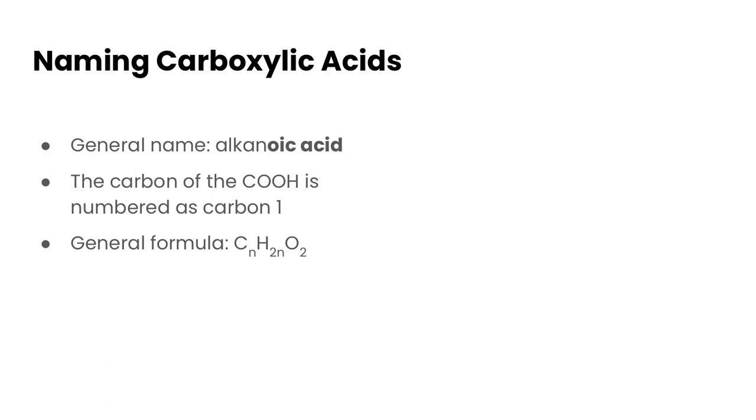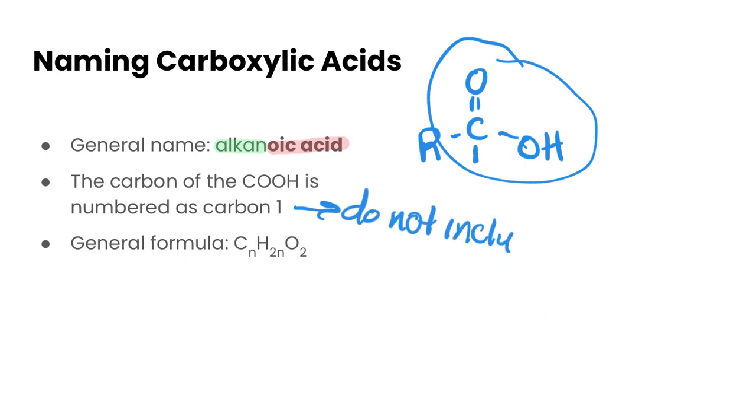We're going to start with carboxylic acids. Carboxylic acids have the general name of alkanoic acid - that's the alkane name with the E ending dropped and it ends in oic acid. These are the type that have the carboxyl functional group - they have a C double bonded to O and then bonded to an OH. This always ends up having to be at the end of a carbon chain. So the carbon in the carboxyl group is always given the number one, and this is prioritized.